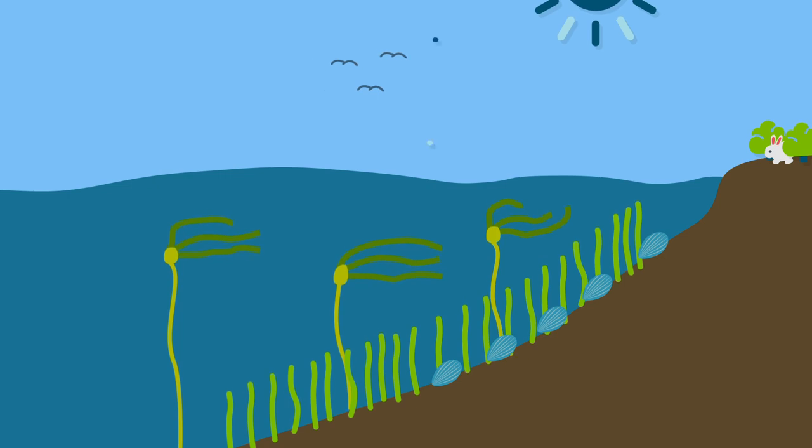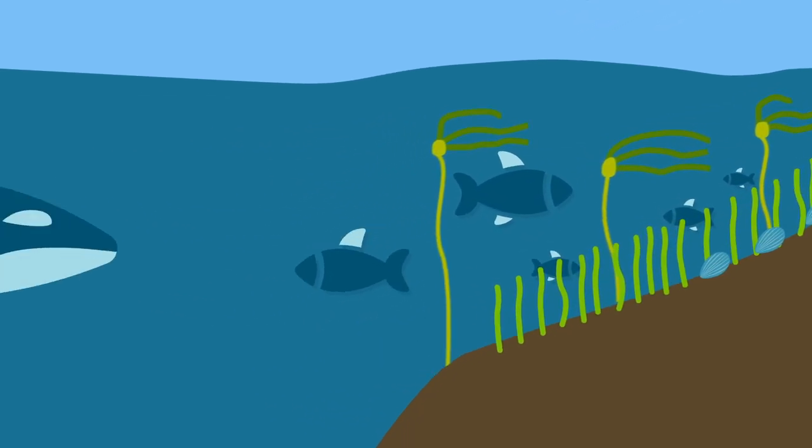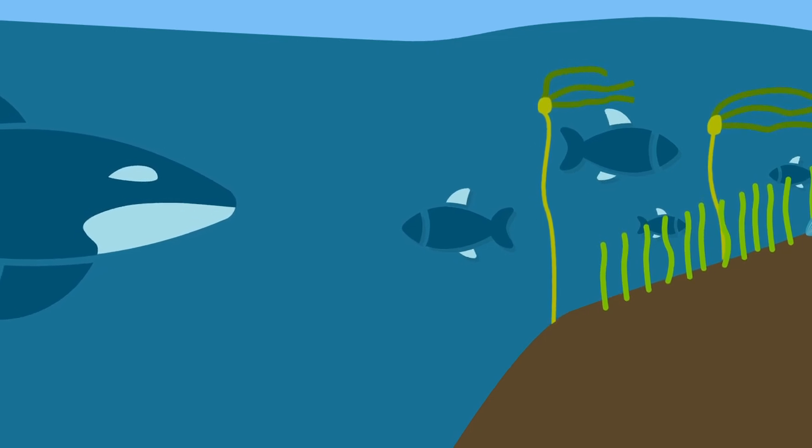And even better, all those pieces work together to create a healthy ecosystem. The eelgrass and kelp provide the perfect shelter for small fish, which attract bigger fish, and support other things that are a whole lot bigger than fish.